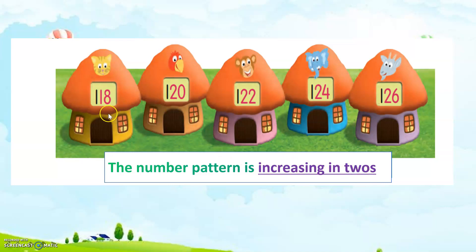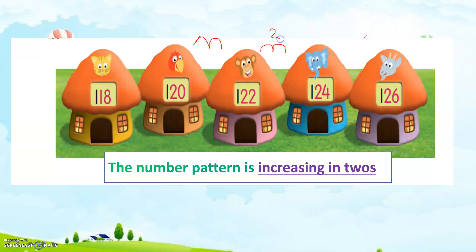Am I correct? 118 to 120: counting 118, 119, 120 — there are 2. Then 120 to 122: 120, 121, 122 — also 2. Then 122 to 124: 122, 123, 124 — also 2. Then 124 to 126: 124, 125, 126 — also 2. So we should write here: increasing in what place value. The number pattern is increasing in twos.